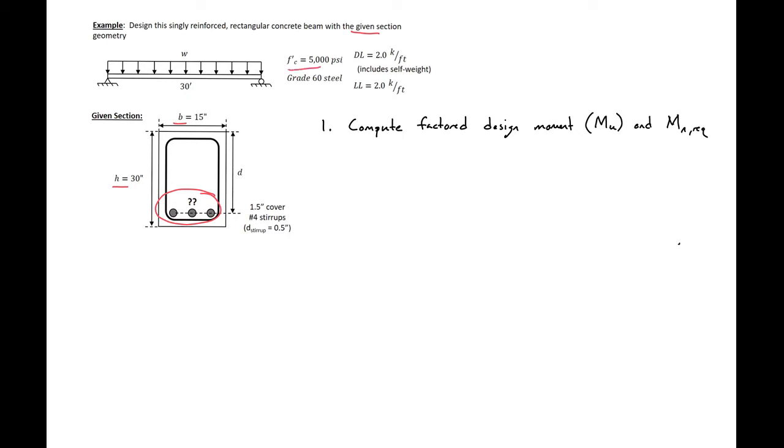We're given our concrete strength, our grade 60 steel, our span length, and our loading - a distributed load with both a dead load and a live load.